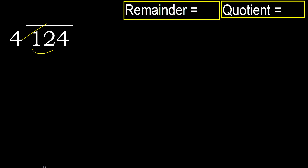4 multiplied by which number is nearest to 12 but not greater? 4 multiplied by 4 is 16, 16 is greater. 4 multiplied by 3 is 12, is not greater. Ok. 12 minus 12 equals 0.